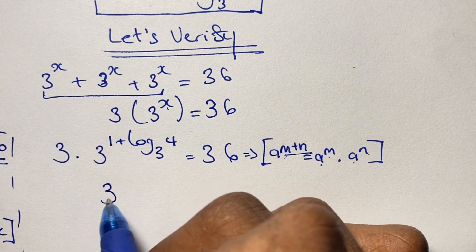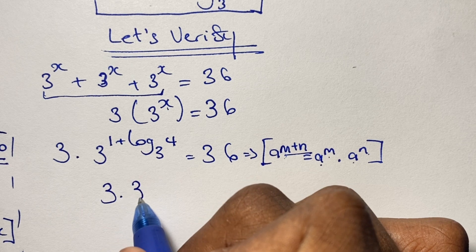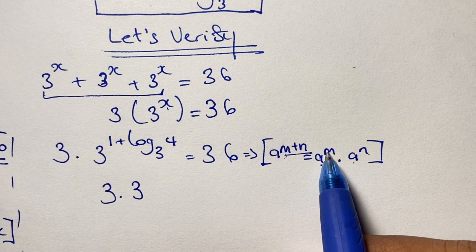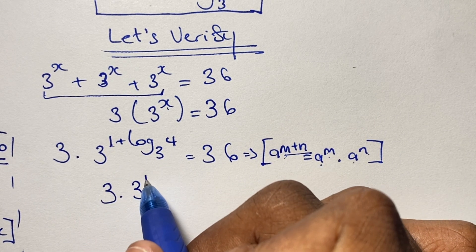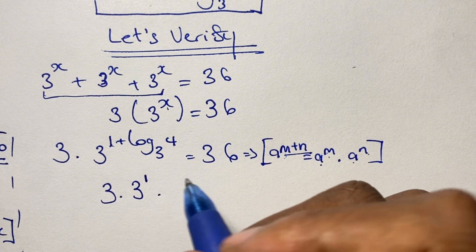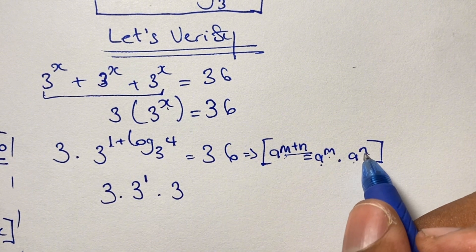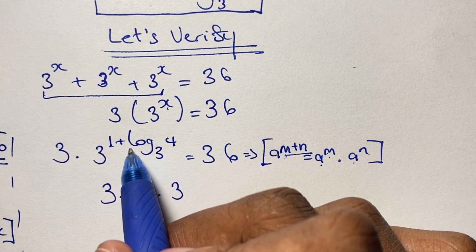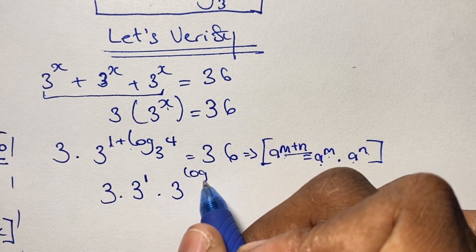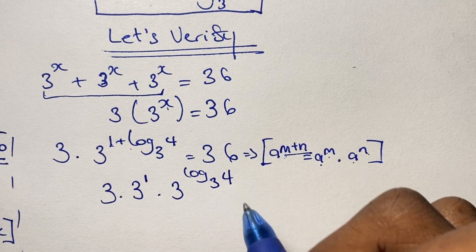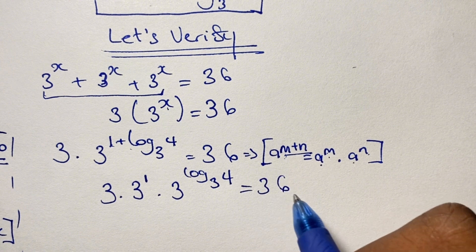Using this rule from the laws of indices, we now get 3 times 3 to the power of 1, times 3 to the power of log base 3 of 4. And again, this should give us 36.